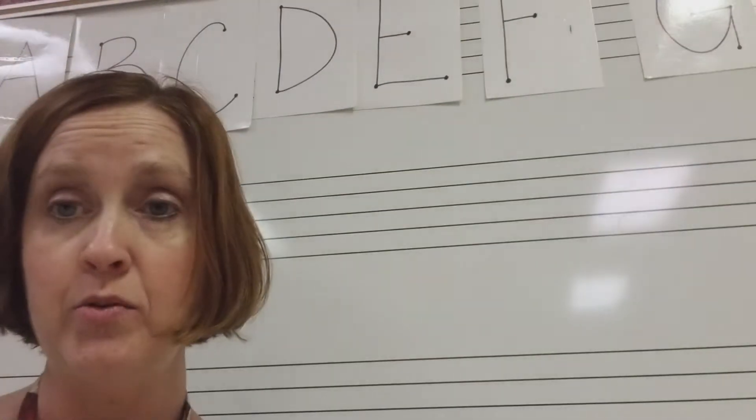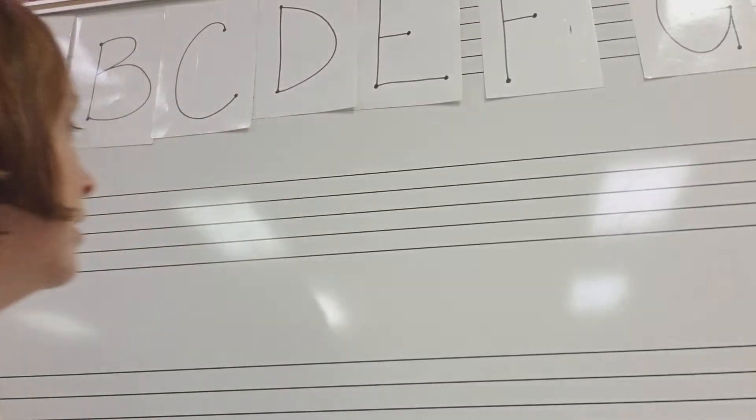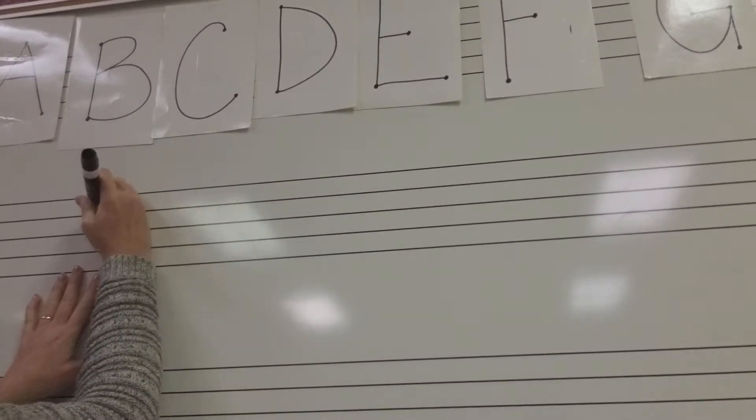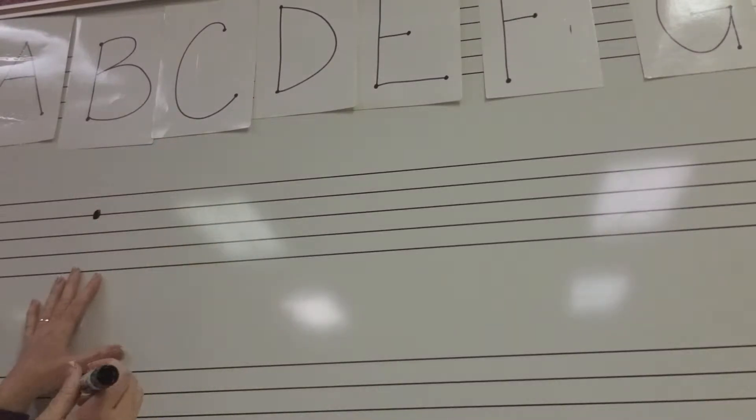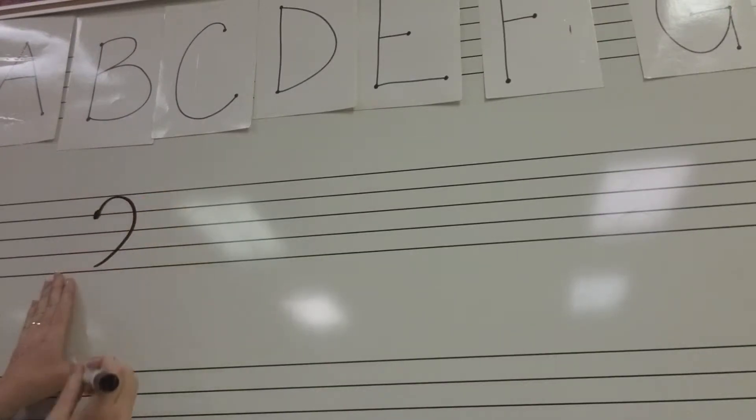So first thing we're going to do is draw our bass clef. This is pretty simple. We're going to start right here. And I'm just going to put a little dot on the fourth line. And then I'm going to draw a backward C.